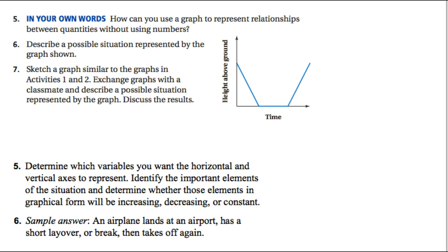How can you use graphs to represent relationships between quantities without using numbers? Determine which variables you want on the x-axis and y-axis, label your axes from the word problem, then come to a conclusion about what's happening. For example, describing a possible situation: a hot air balloon is above ground, comes down, refuels, and goes back up. Or a plane at Newark lands, refuels, then flies to Miami.